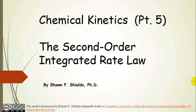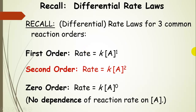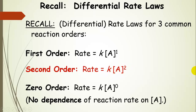Chemical Kinetics: the second order integrated rate law. Last time we talked about the differential rate laws for three common reaction orders. We looked at the integrated rate law for the first order process and now we're going to talk about the integrated rate law for a second order reaction. For the second order reaction, the rate is equal to the rate constant times the concentration of A to the second power, and that's a second order process overall.